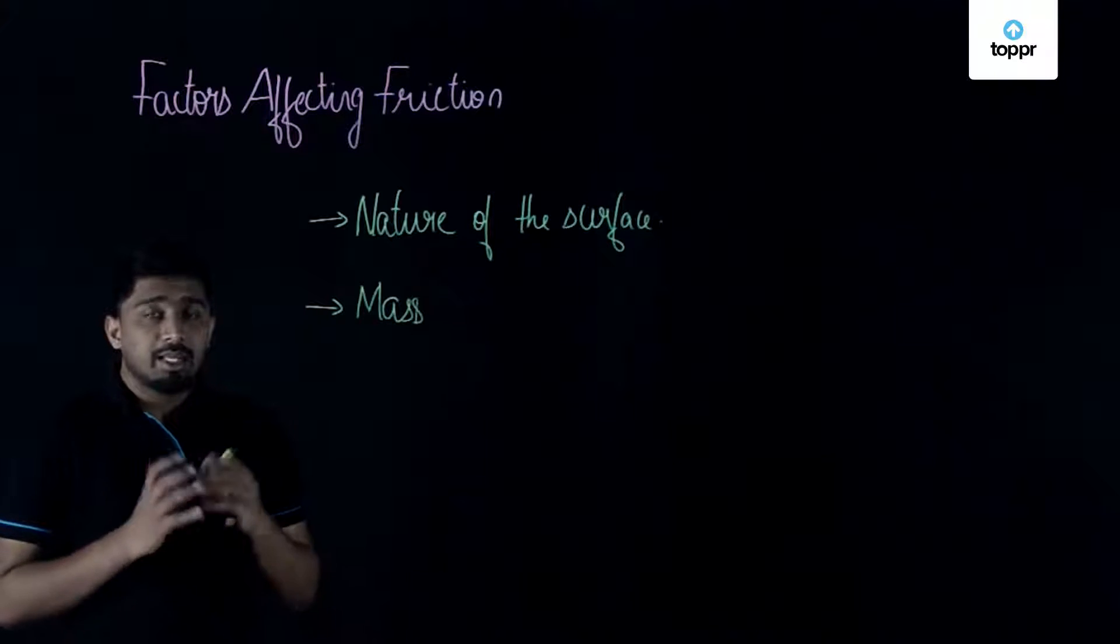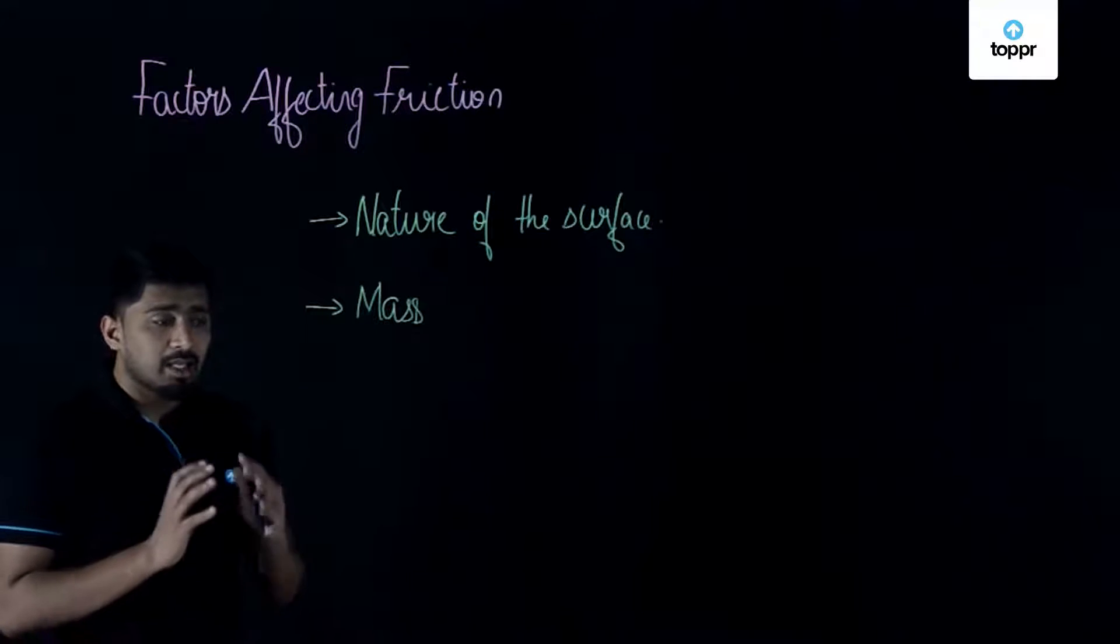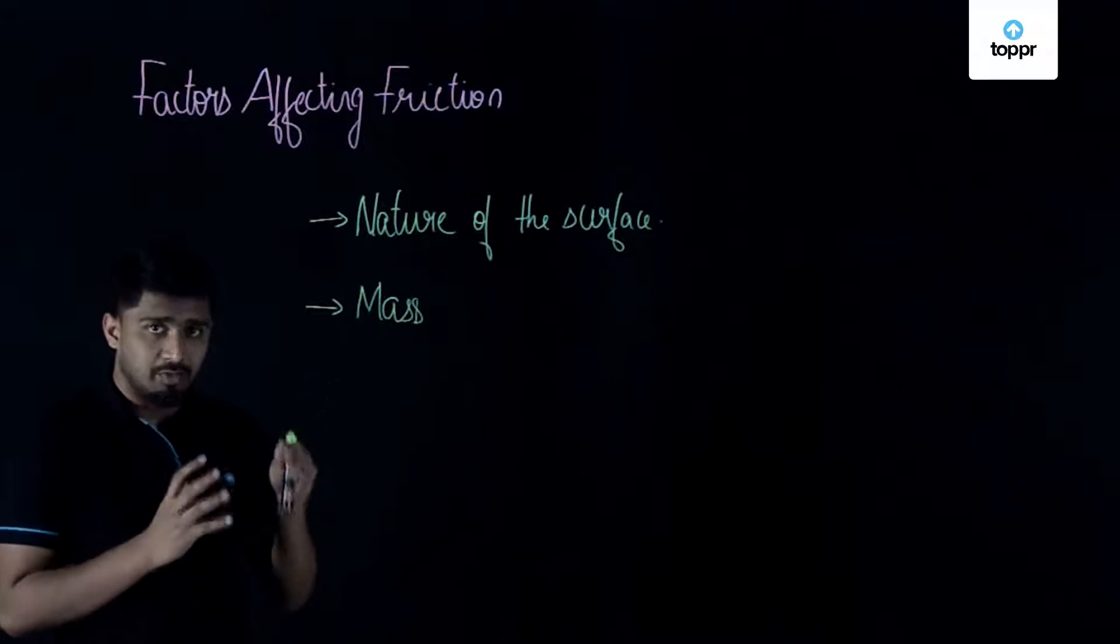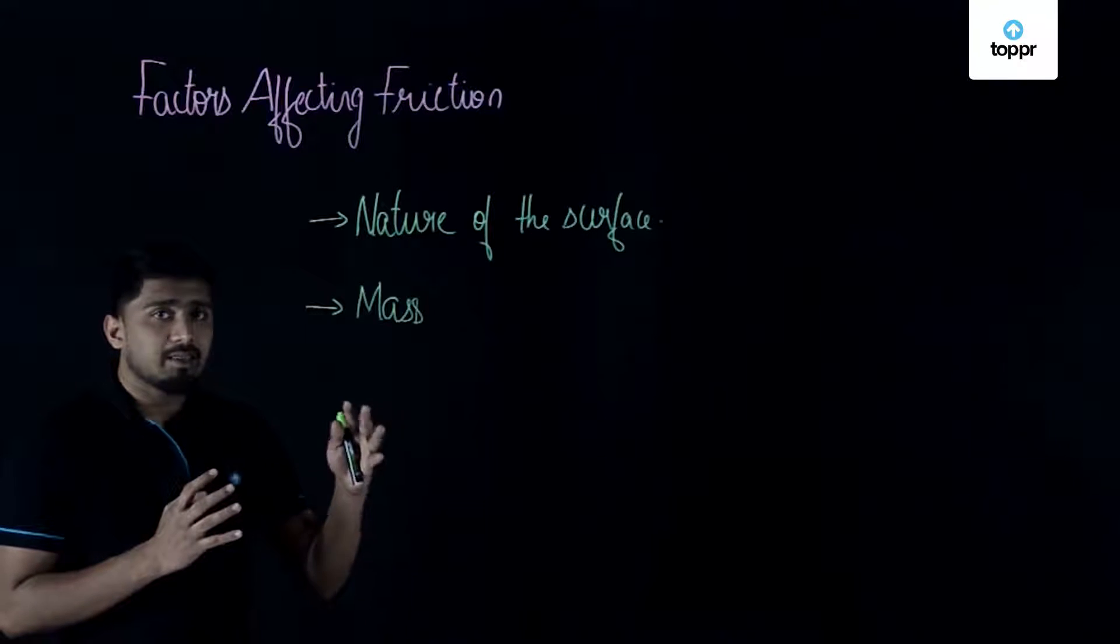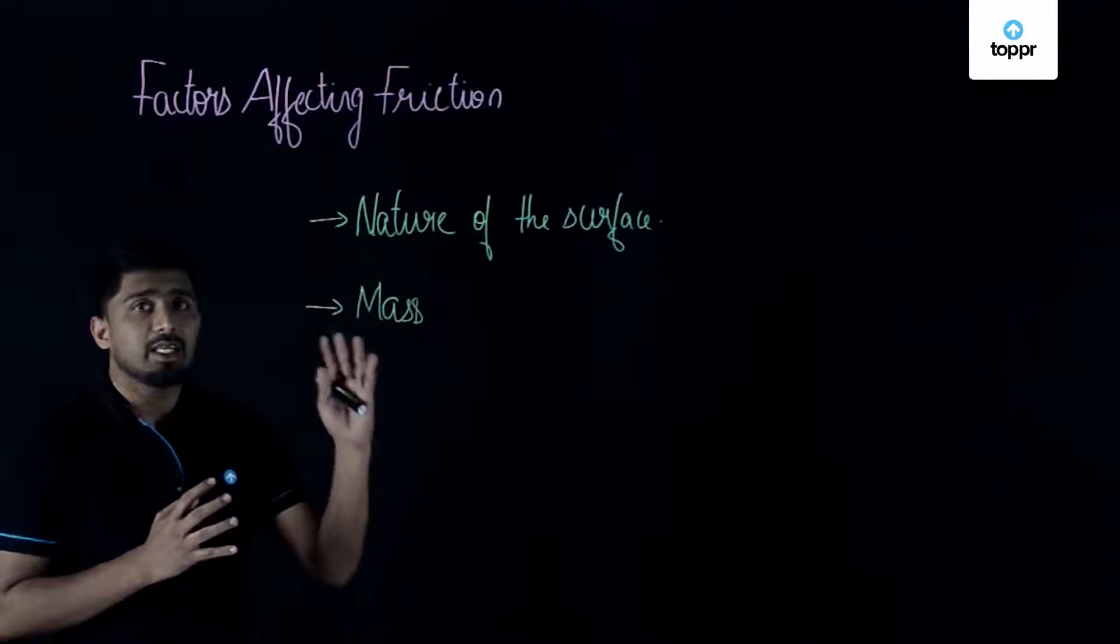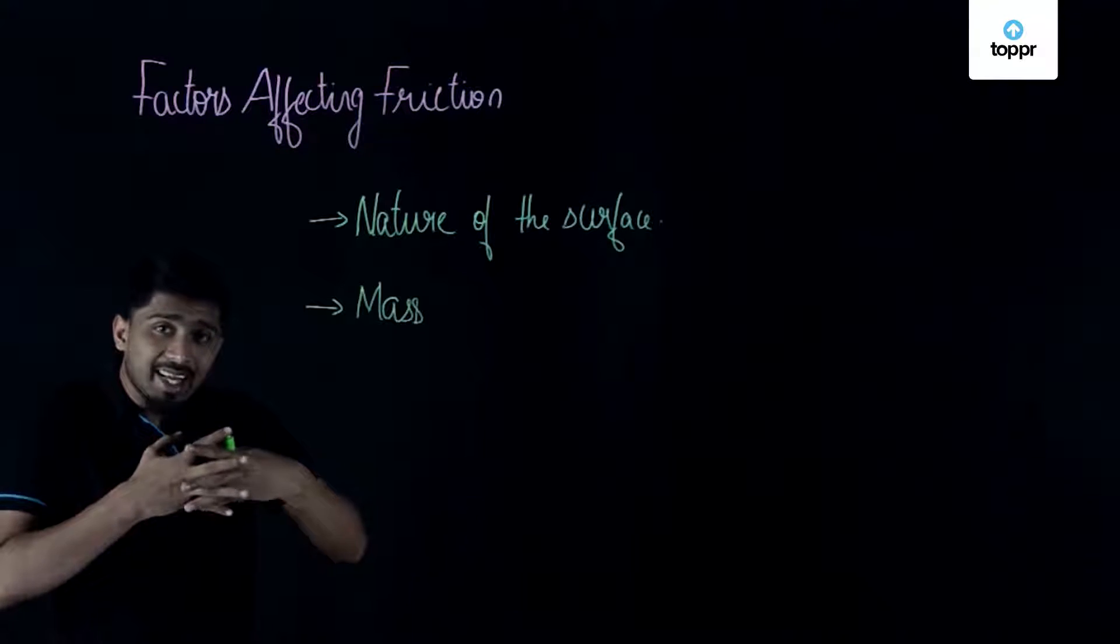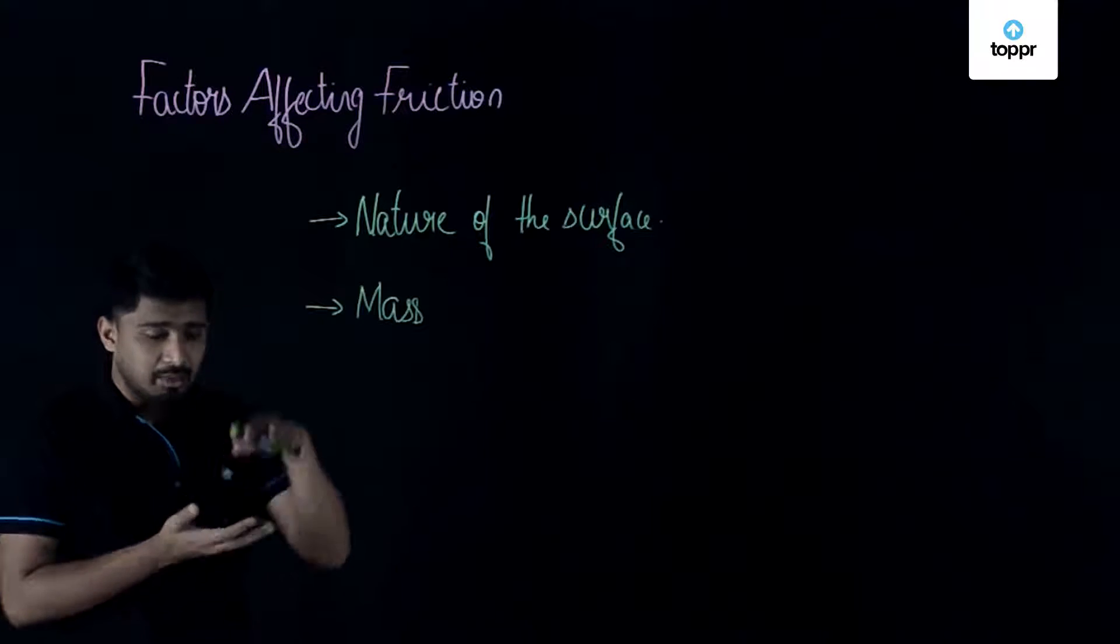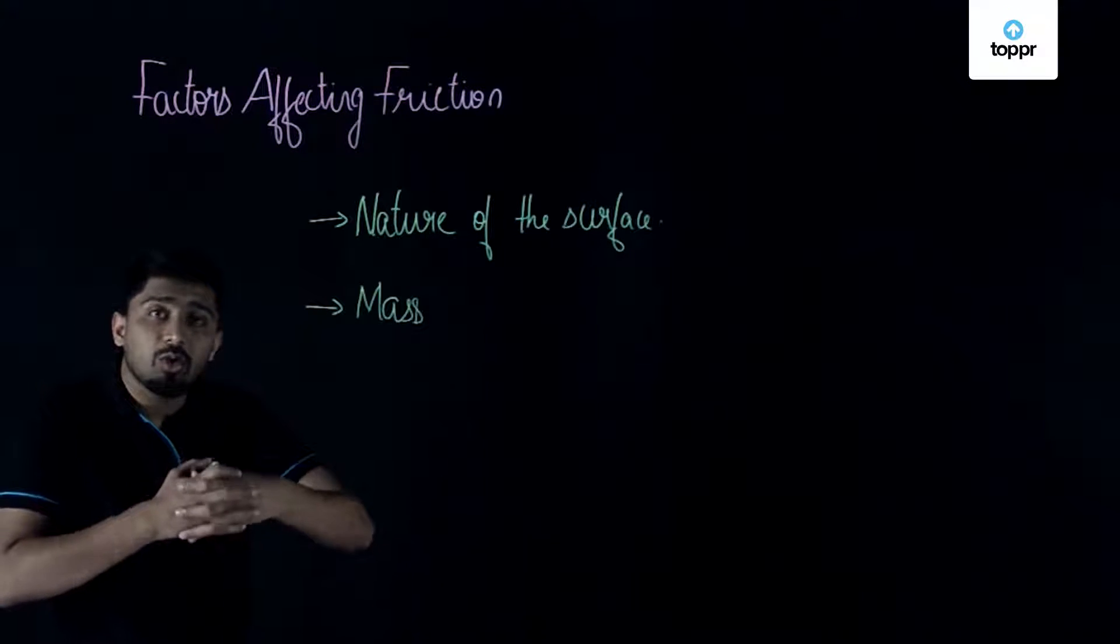That means what is happening is when the mass is getting increased, the irregularities between the surfaces... In our example, the 50 kg sac was a heavier one. So, the irregularities of that sac will be getting interlocked with the irregularities of the surface. It will be getting interlocked in a very good manner.